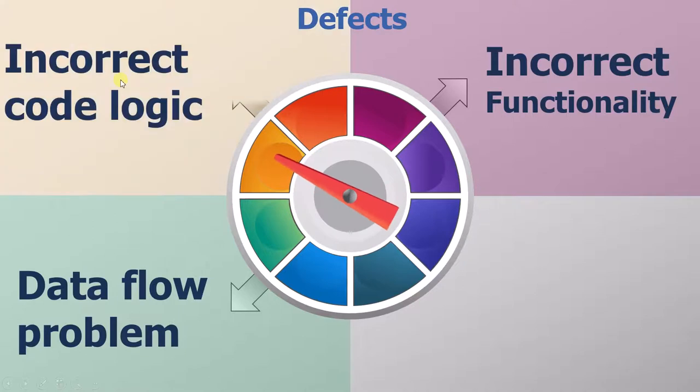Third is incorrect code logic. If we find that the logic in the design has not been properly implemented in the code, then we have found a defect. Since we are testing the smallest component, these errors in logic are easy to discover.